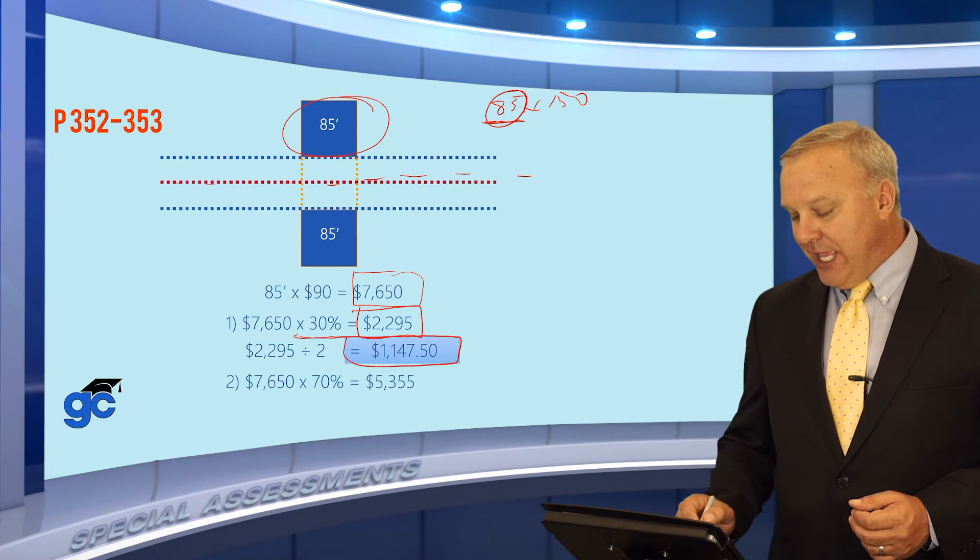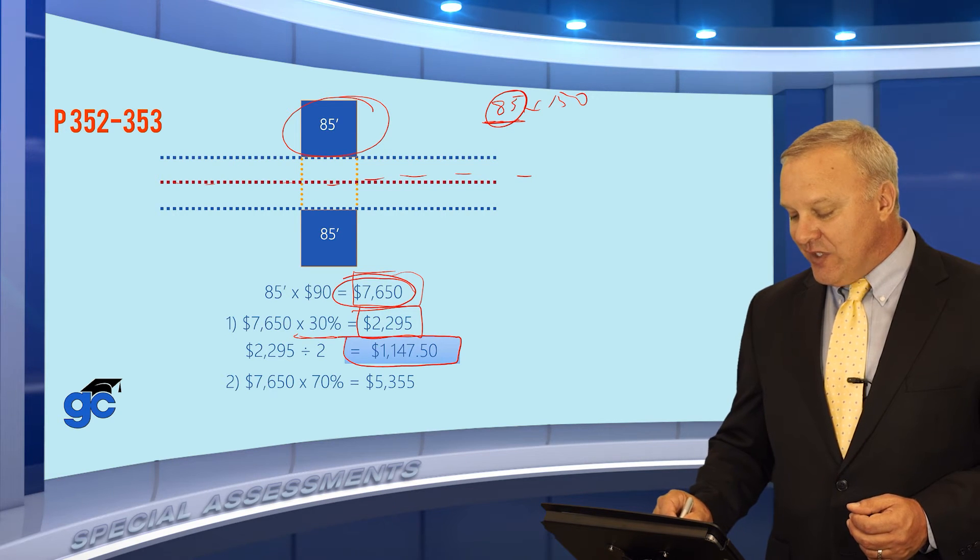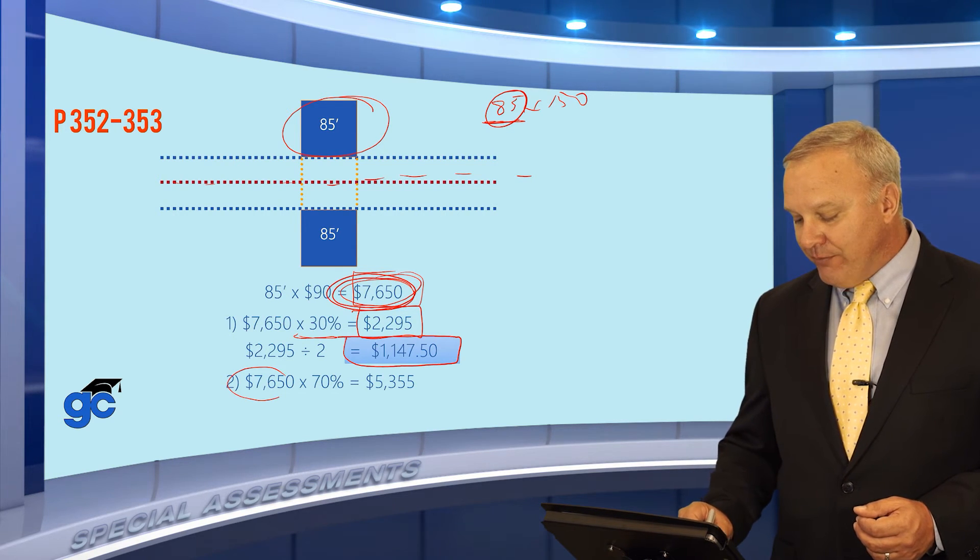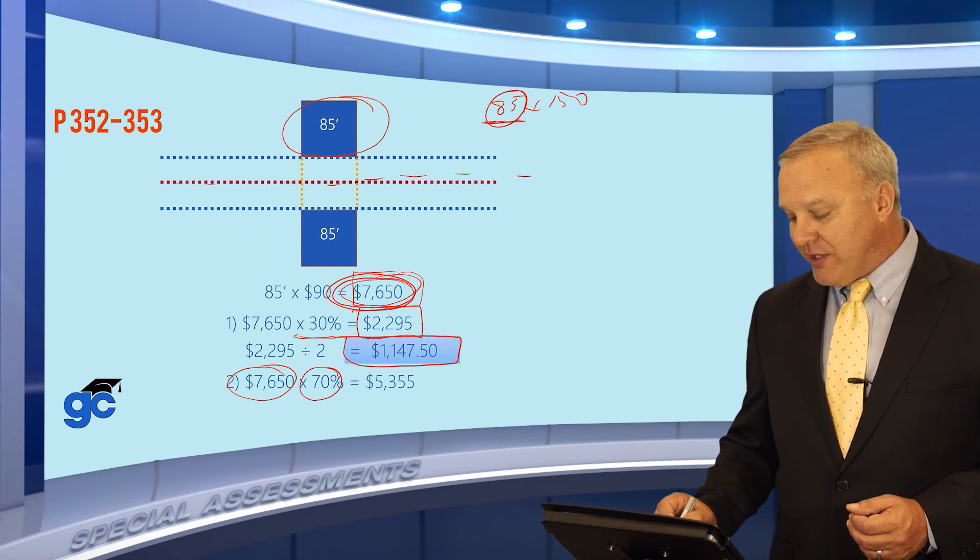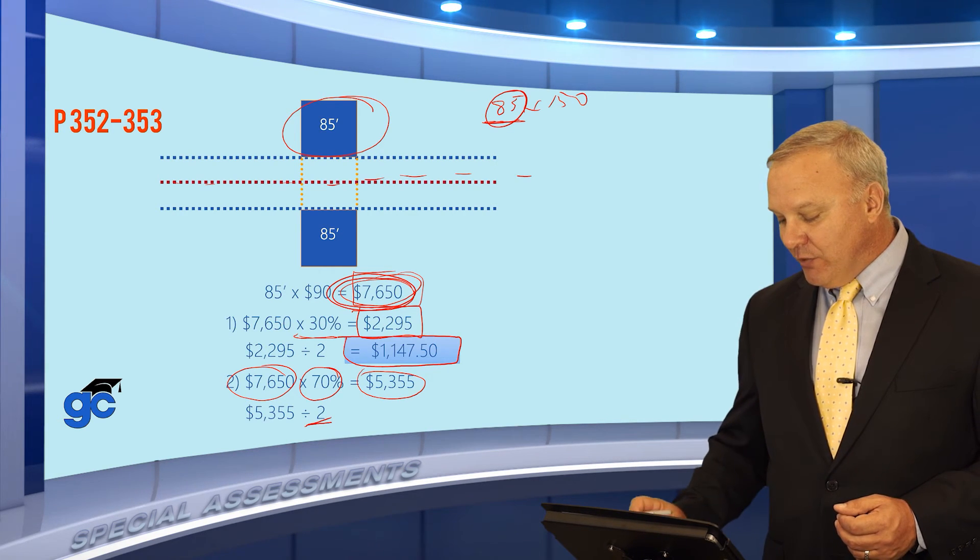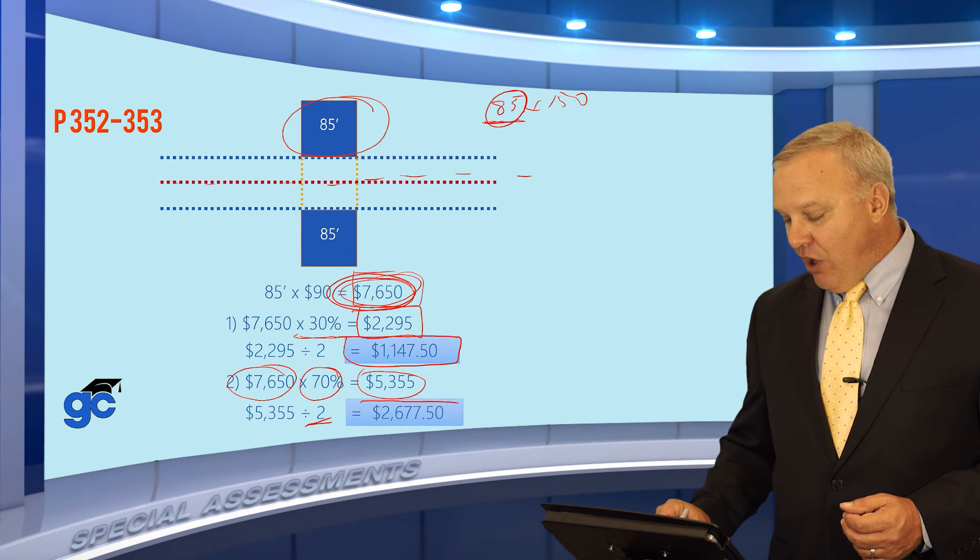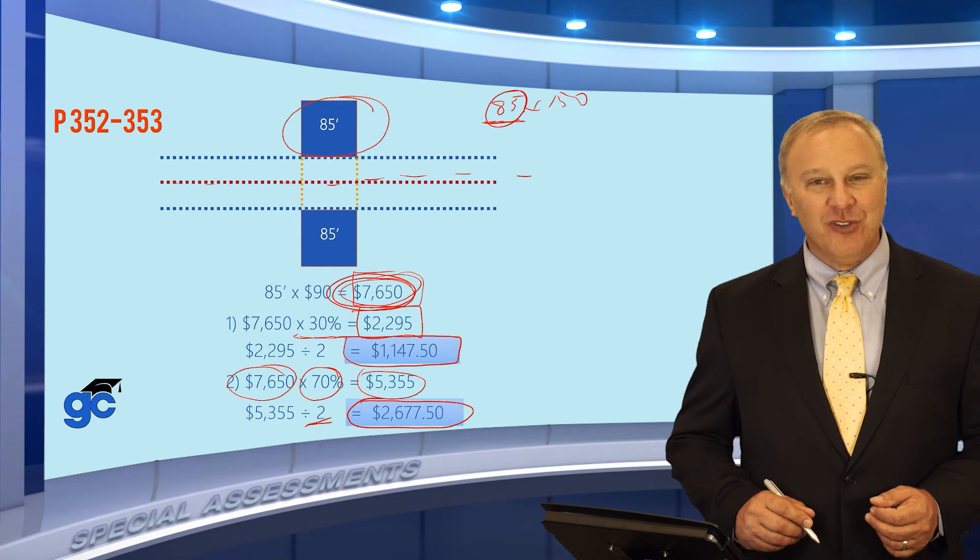Let's move along a little further. If the homeowners are paying 70%, then the total cost is still $7,650. The homeowners are responsible for 70%, so the total cost for the homeowners is $5,355, but there are two sides to the street. So we divide that by two and the cost for each homeowner is $2,677.50.